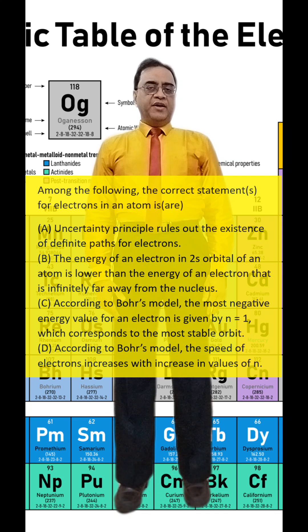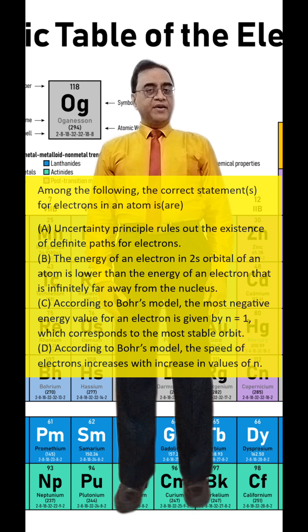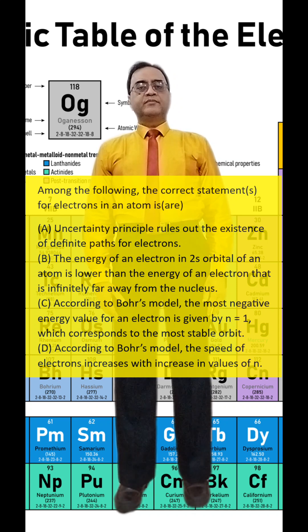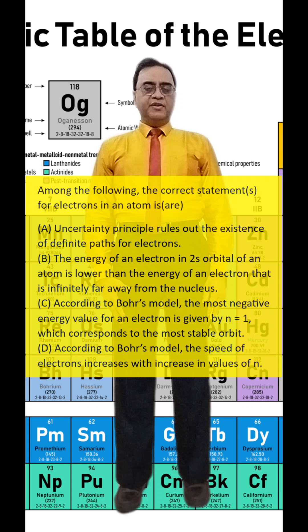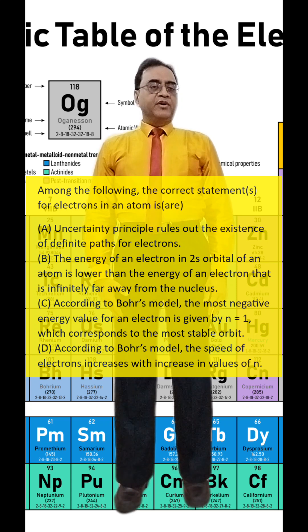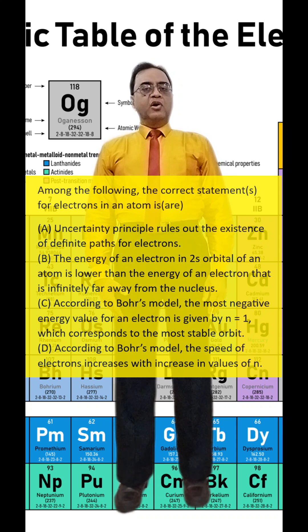When electron is infinitely far away, then the energy is maximum and the maximum energy is zero. So when the electron is closer, the energy would be negative. So in 2s, it will be lower and it will be negative.